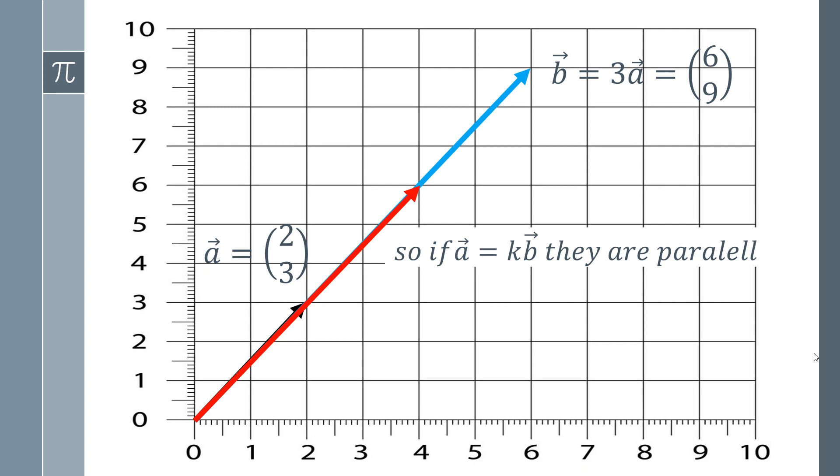If we get a situation where we simply cannot find a value of K, and that's one value that we can use to turn vector B into vector A, and that's one scalar number, then they are not parallel. And let's look at what that means in practice.